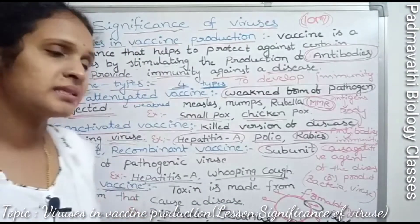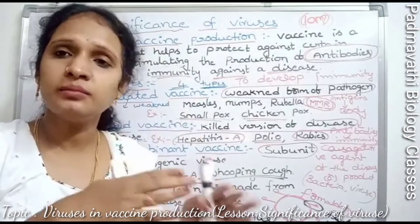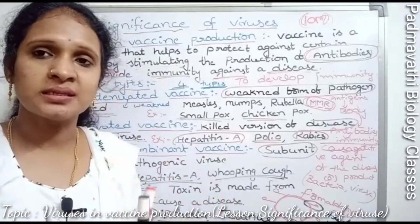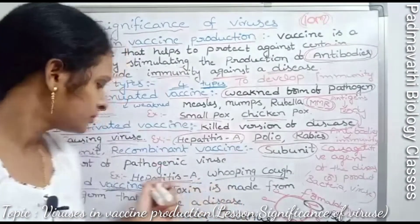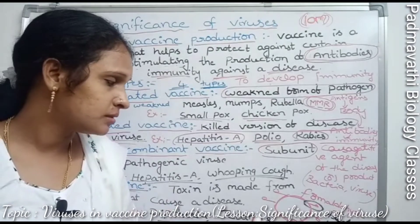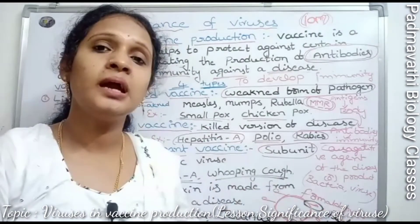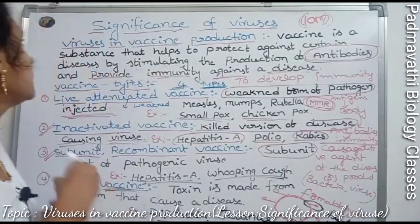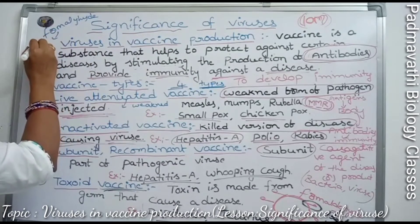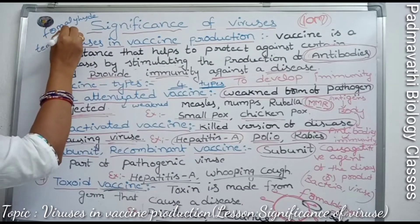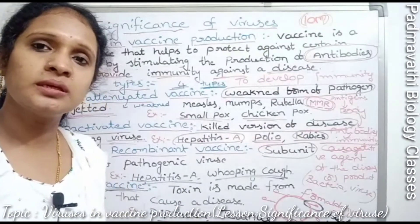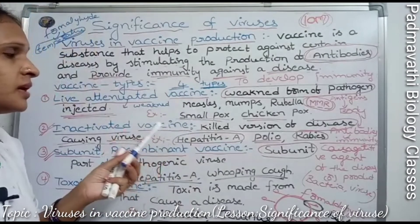To summarize toxoid vaccines: toxins are developed from the pathogen — bacteria or viruses — through formaldehyde treatment and high-temperature exposure, forming toxoids that are directly used in vaccine production. This vaccine is used for diseases like diphtheria and tetanus.